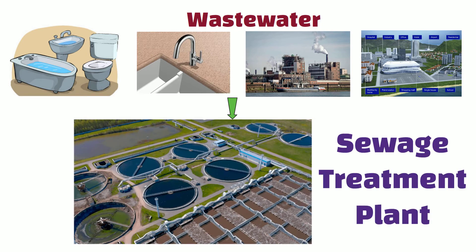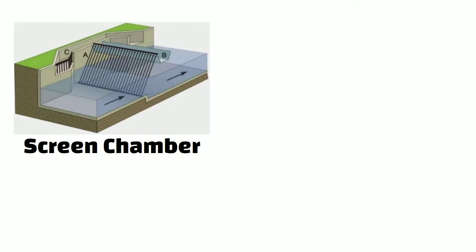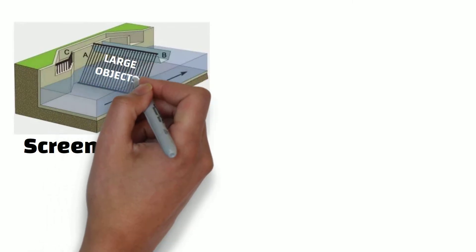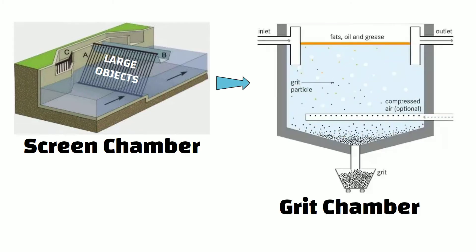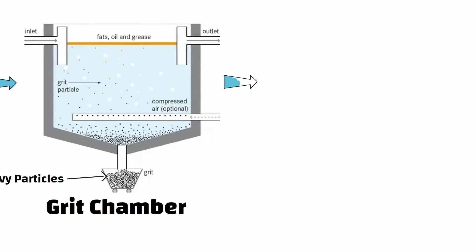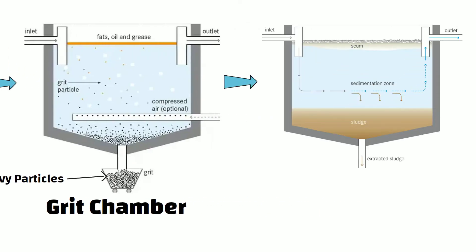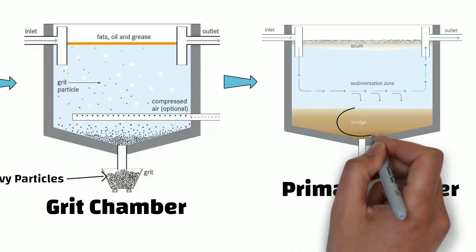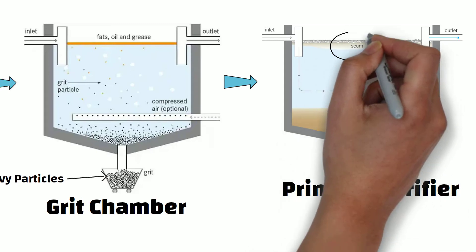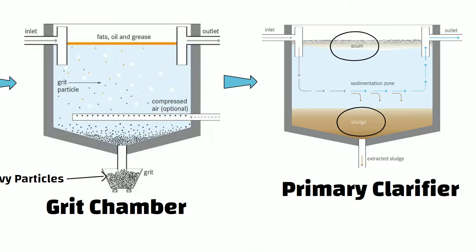At the sewage treatment plant, the waste water is screened in screen chamber to remove large objects. Then it passes through a grit chamber where heavy particles are removed. After that, water flows into the primary clarifier where solid materials and floating materials like oils and grease are removed.